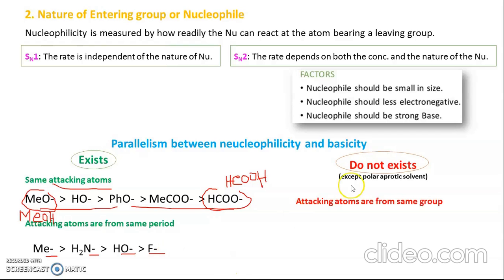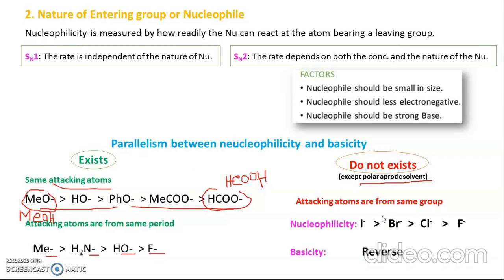Parallelism between nucleophilicity and basicity does NOT exist when attacking atoms are from the same group — but remember this applies only for polar protic solvents. For example, all halide anions are from Group 17, and their nucleophilicity and basicity completely reverse in polar protic solvents, because the solvent has hydrogen bonding capacity. In polar aprotic solvents, since there is no such hydrogen bonding factor from the solvent, the correlation between nucleophilicity and basicity can be expected.